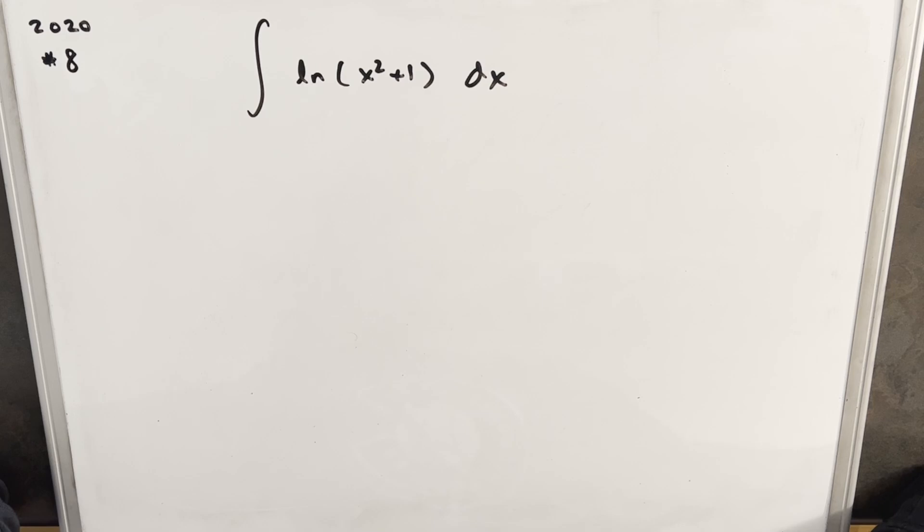Kind of typically with natural log, we may look for a u substitution first if it's available, but in this case, a u substitution doesn't really look very promising. So I think what we want to do is use integration by parts.